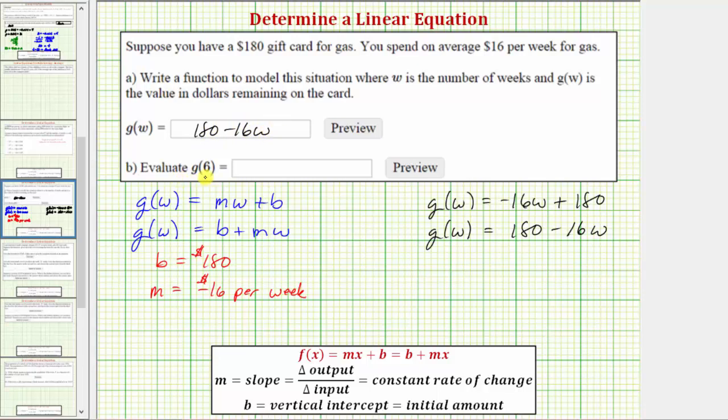And for the second part, we're asked to evaluate g(6). So to determine g(6), we'll substitute 6 for the input variable w. Simplifying on the right side, we get 180 minus 96, which equals 84. So g(6) equals 84.